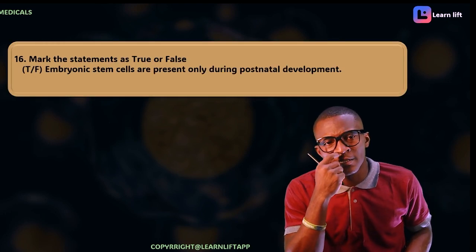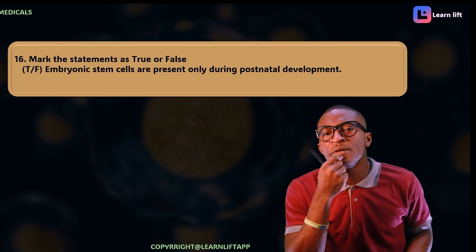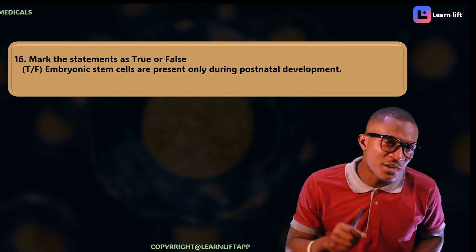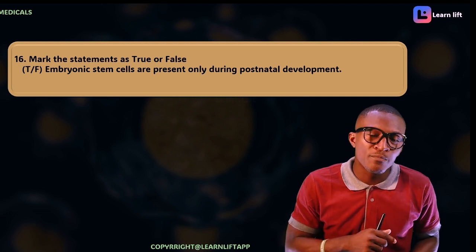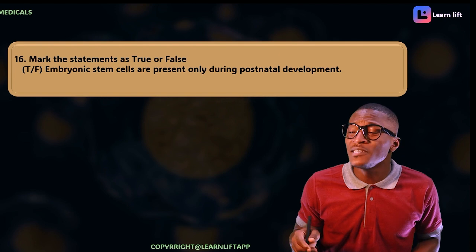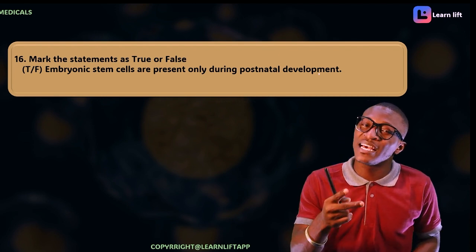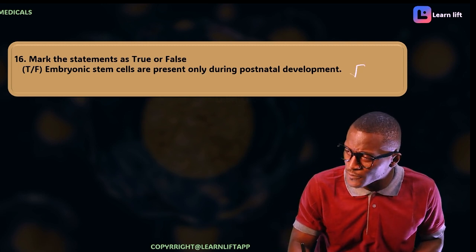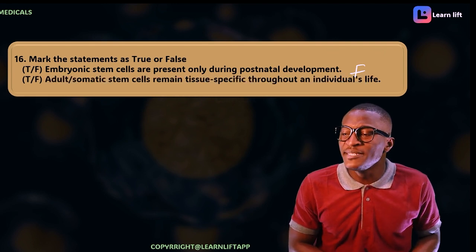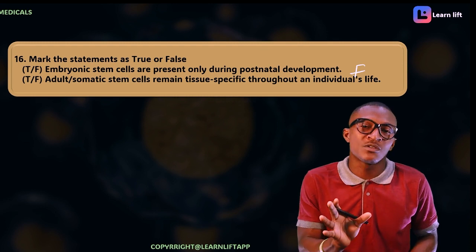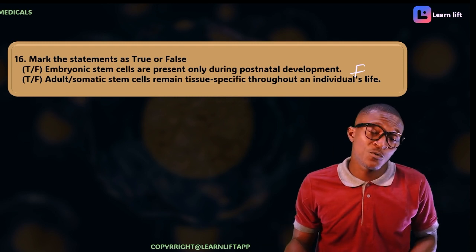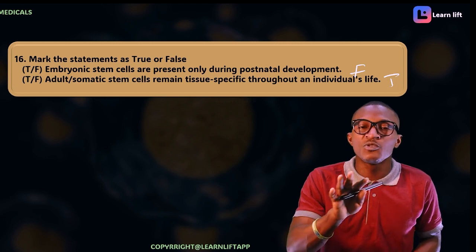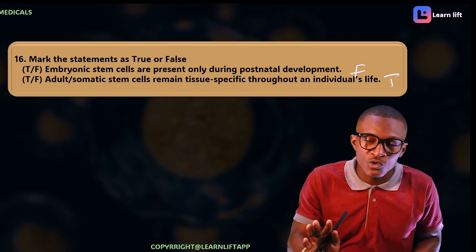True or false: embryonic stem cells are present only during postnatal development. This is false — embryonic stem cells are present from the pre-implantation developmental stage, not only postnatally. We have two types: embryonic stem cells and adult stem cells. Next: adult stem cells remain tissue-specific throughout their lifetime. For an adult, cells are already differentiated and specialized, so they are tissue-specific throughout their lifetime. The answer is true.